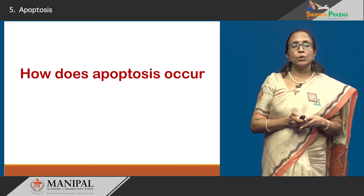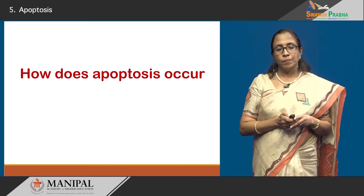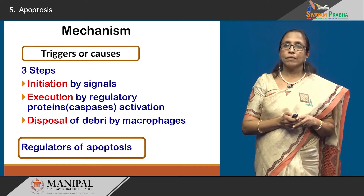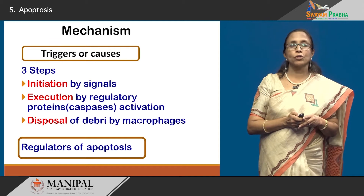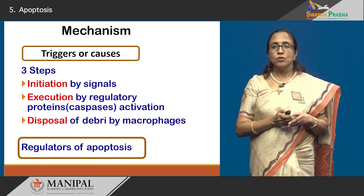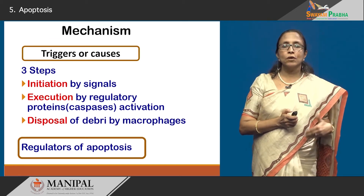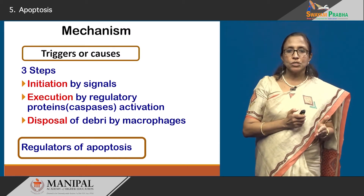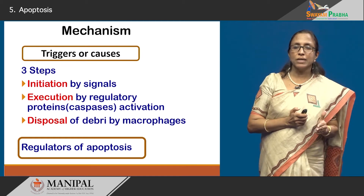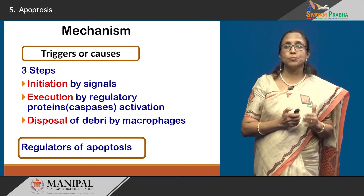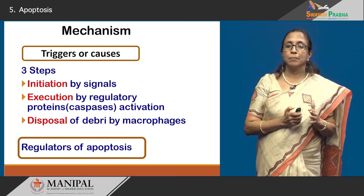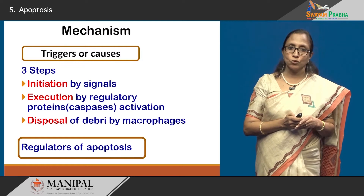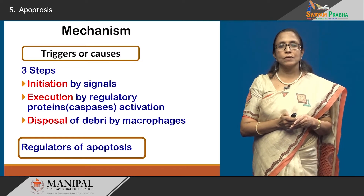Now moving on to how apoptosis occurs — we will look at the mechanism. The various triggers lead to the next step of initiation by various signals, then execution where regulatory proteins and caspases are involved, and then disposal of all the dead cells by macrophages. We will also look at a few regulators of apoptosis.